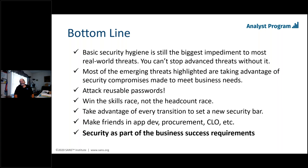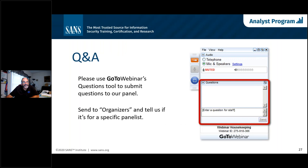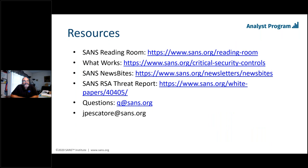Think about it: for years we've tested Windows patches to make sure they didn't break our applications. Maybe for just about every software package, we should be doing that using tools that find hidden capabilities as well as typical vulnerabilities, and requiring vendors to show evidence of doing that. With that, we're just about at the end of the session. We've gone through questions and answers. There are a bunch of SANS URLs where you can get more information — the reading room, the What Works program, and the SANS Newsbytes newsletter if you're not a subscriber.